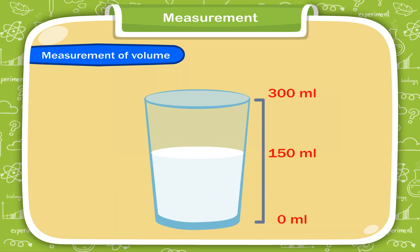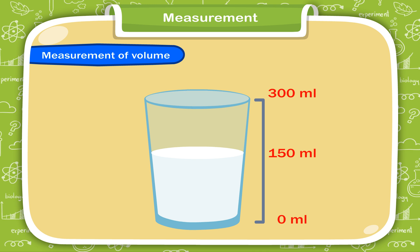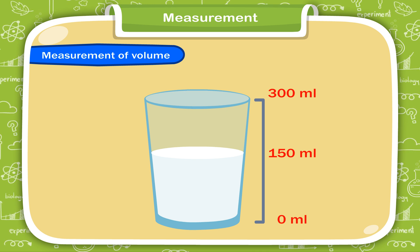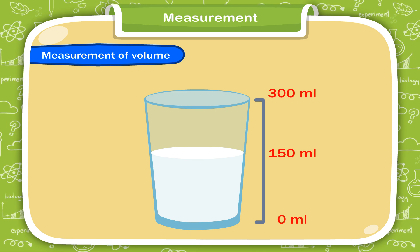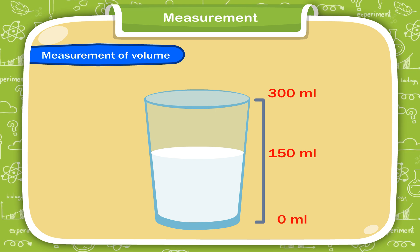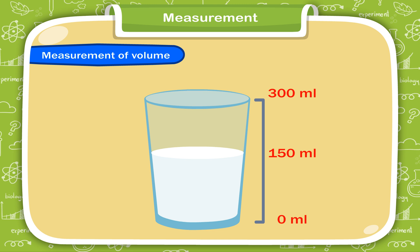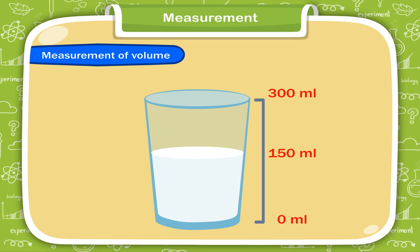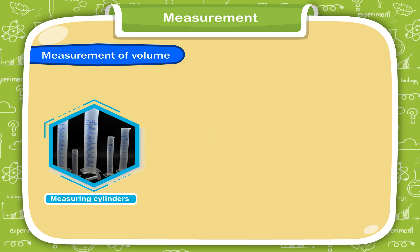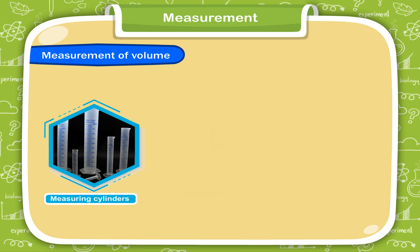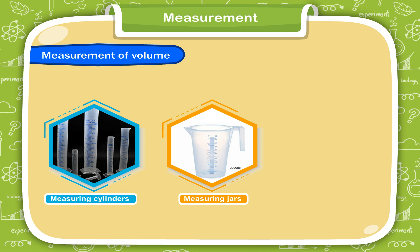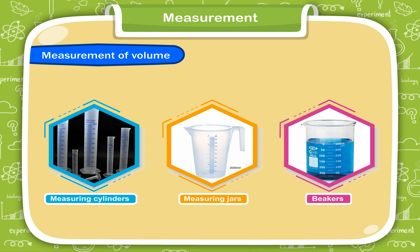Look at the given glass. The glass has a capacity of 300 millilitres, but the volume of the milk in the glass is 150 millilitres. We use measuring cylinders, measuring jars, and beakers to measure volume.